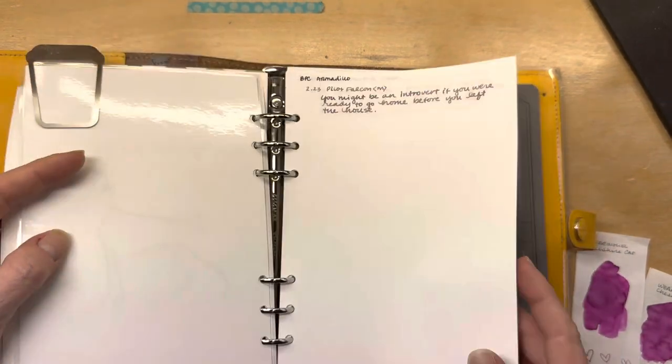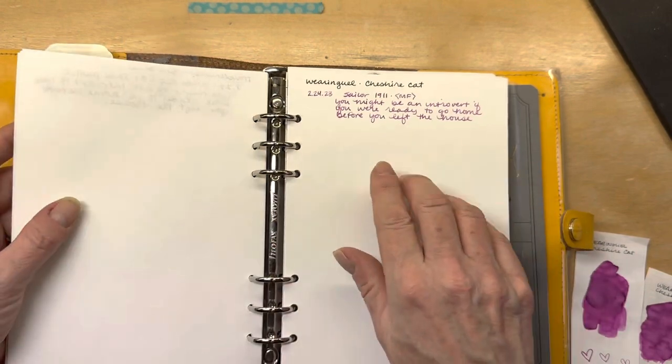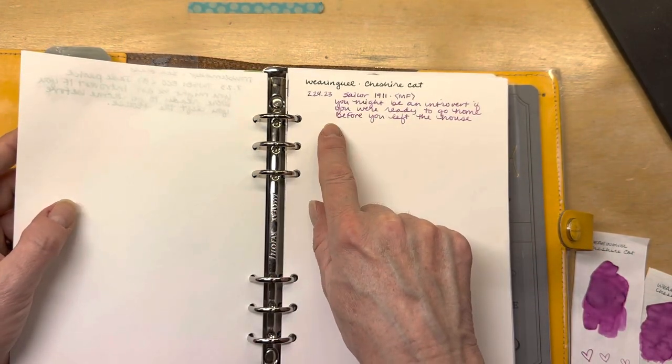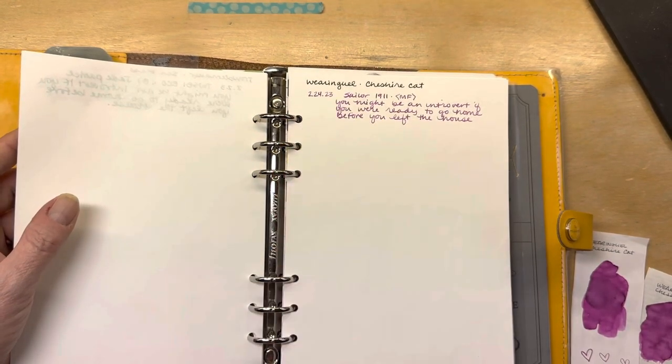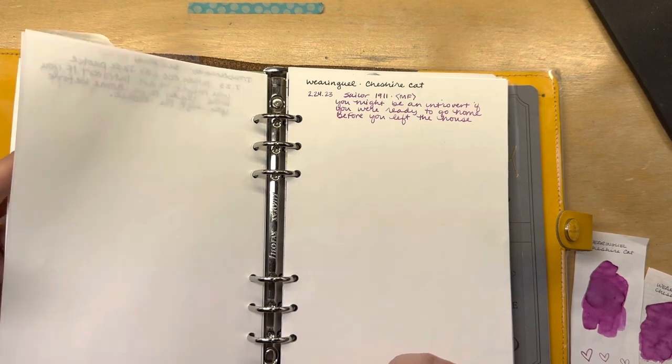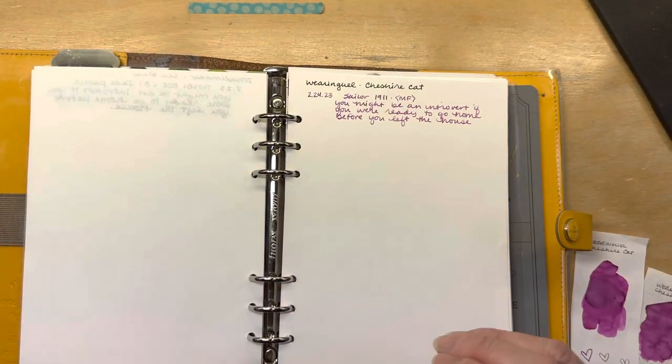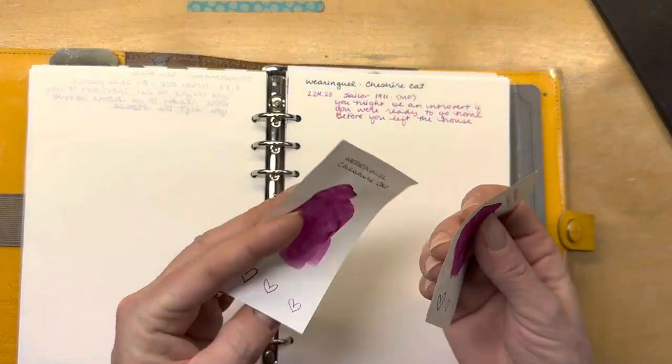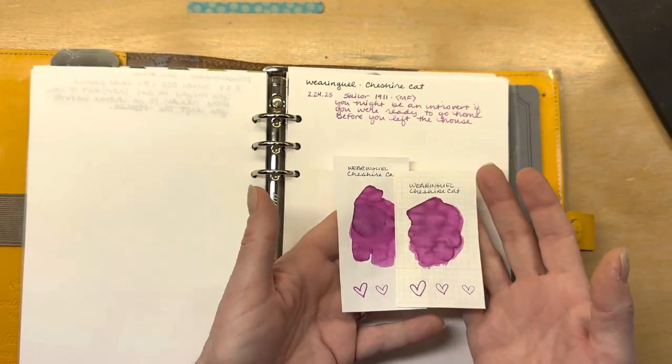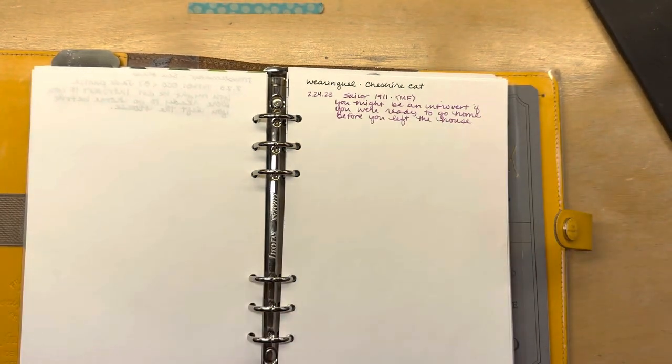I can imagine not being off put by a two page spread in this ink color. So then back to the other one, these are all alphabetical. So I started Birmingham pen company and all the way back to Wearingeul. So here's Cheshire Cat ink and the first pen that I've ever put it in is the Sailor 1911 with a medium fine nib. I'll be curious to see what this ink looks like in a wider nib pen. I might do maybe just a little bit to see what it looks like in a wider nib. So hated this, love this. And the opposite has happened also.